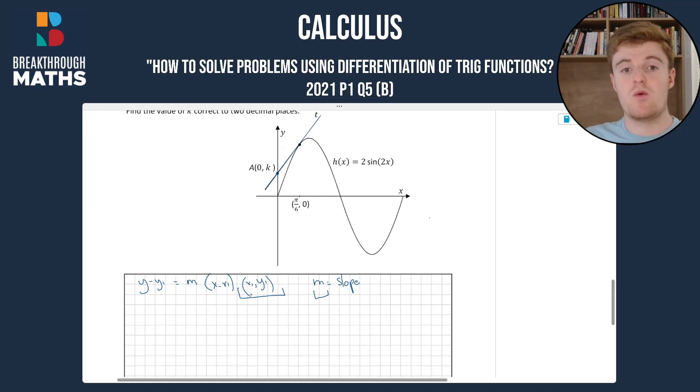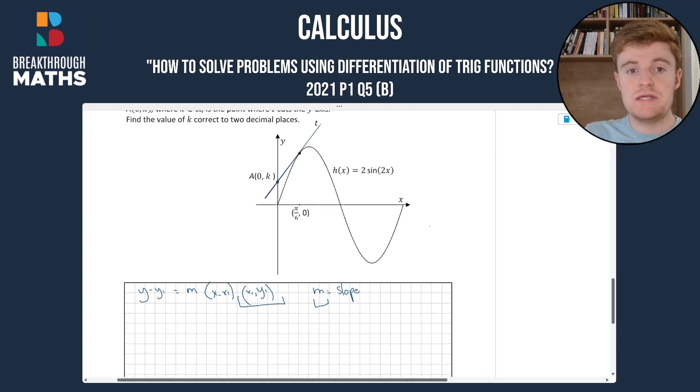So we'll do x₁ and y₁ first. We're going to use this point here on the diagram at the point x = π/6. So if we sub in x = π/6 into h(x) because we know that that's when t intersects, it's at that tangent point, we'll be able to find out what the point on t is.